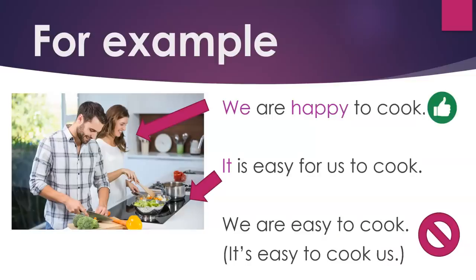For example: 'We are happy to cook' means we enjoy cooking — it is easy for us to cook. The focus is on the food or the activity of cooking. If you say 'We are easy to cook,' that means it is easy for someone to cook us. You do not want to say that.